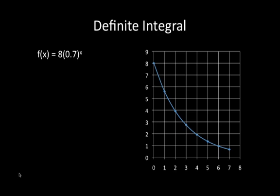So for this example, our equation is f of x equals 8 times 0.7 to the power of x. So what I've done is I have graphed this function on a graph, and what I'm going to do is use the box counting method. Yay, everybody loves to count boxes.